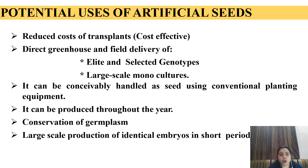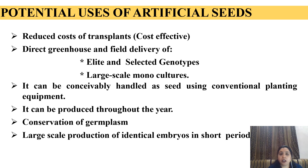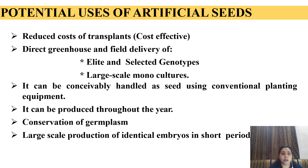Potential uses of artificial seeds: Reduced cost of transplant — it is very cost-effective, low-cost technology. They can be directly transferred to greenhouse and fields. Allied and selected genotypes can easily be produced and propagated. Large-scale monocultures can easily be produced. They can be conveniently handled as seed using conventional planting equipment. They can be produced throughout the year and their supply is non-interrupted. Conservation of germplasm is possible. Large-scale production of identical embryos in a very short period can be done.